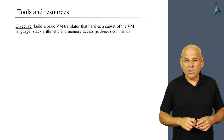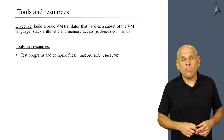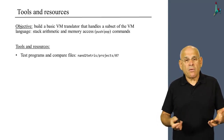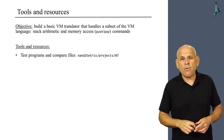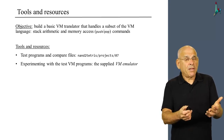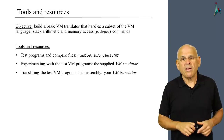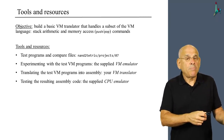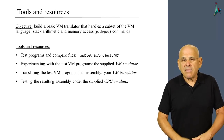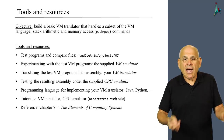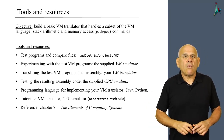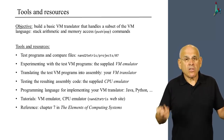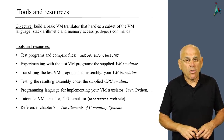You have to use all sorts of tools and resources in this project. The test programs and compare files are available in the project directory on your computer. You have to experiment with the supplied VM programs using the supplied VM emulator, translate them into assembly using your VM translator, and test the resulting code using the supplied CPU emulator. To develop the VM translator you need a high level language like Java or Python. We recommend looking at the VM emulator tutorial, the CPU emulator tutorial, and you can also consult Chapter 7 in the NAND2Tetris book, the elements of computing systems.